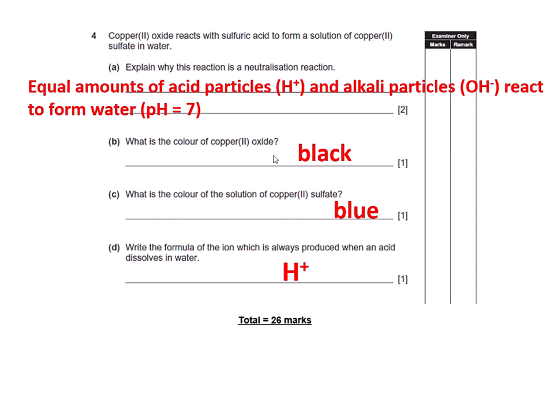Copper(II) oxide is black. Copper(II) sulfate: all copper salts are blue. Finally, the formula for the ion which is always produced when the acid dissolves in water is H+. I adjusted the marks because we've taken a couple of blanks off there, 23 marks.